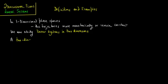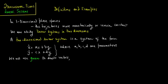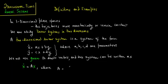A two-dimensional linear system is a system of the form: x-dot equals ax plus by, y-dot equals cx plus dy, where a, b, c, d are all parameters. We will use green to denote vectors, and this system can be written as x-dot equals Ax, where A is the matrix [a, b; c, d] and x is composed of x and y.